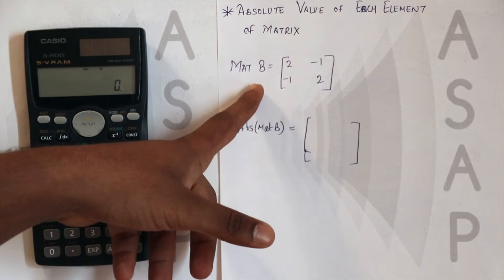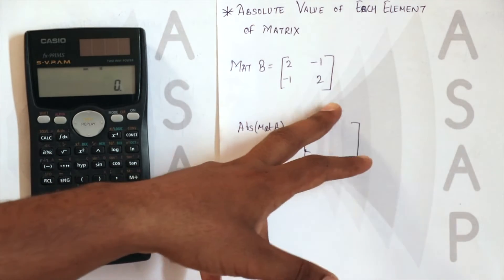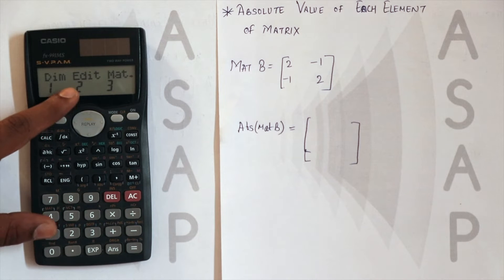So I have already entered the contents of this matrix B that is 2, minus 1, minus 1. We will just check this, that is shift 4, then matrix B.